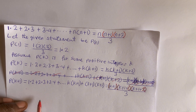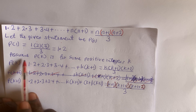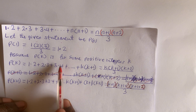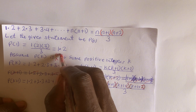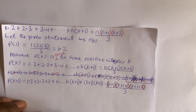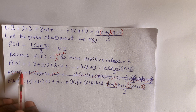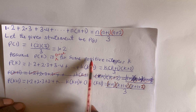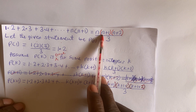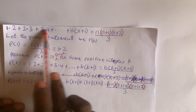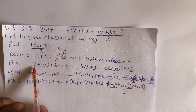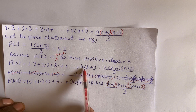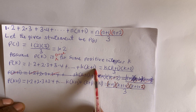Now we assume that P(k) is true for some positive integer k. We substitute k into wherever we see n, so if P(k) is true, then 1×2 + 2×3 + ... + k×(k+1) = k(k+1)(k+2) divided by 3.